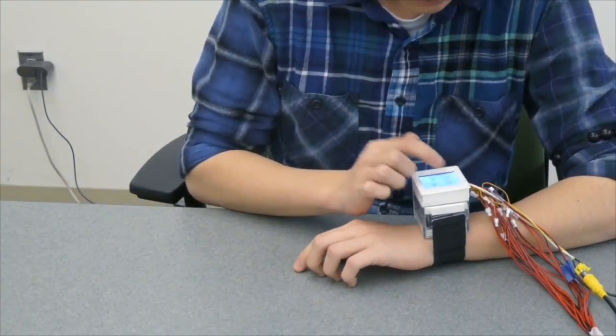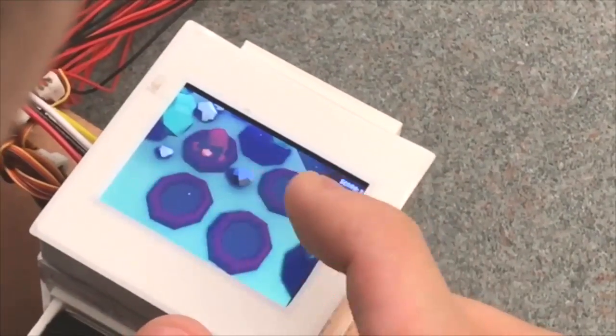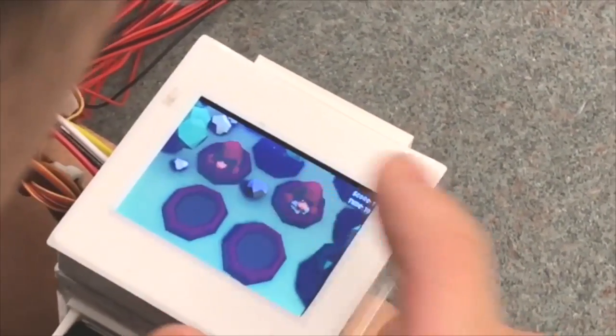We present Retroshape, a smartwatch with a deformable display on its rear surface that extends virtual scenes to the 2.5D physical world.